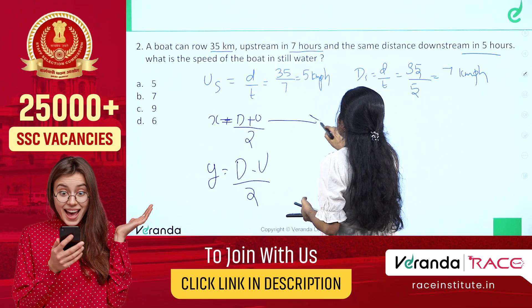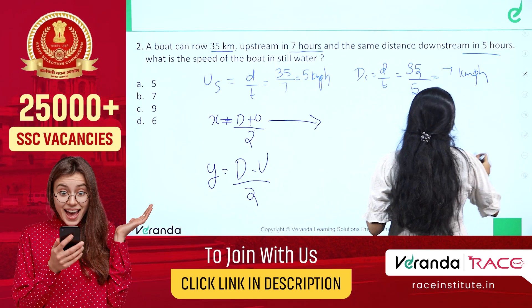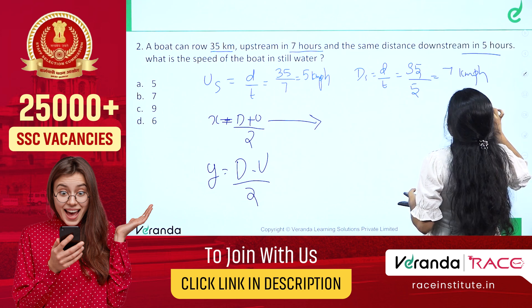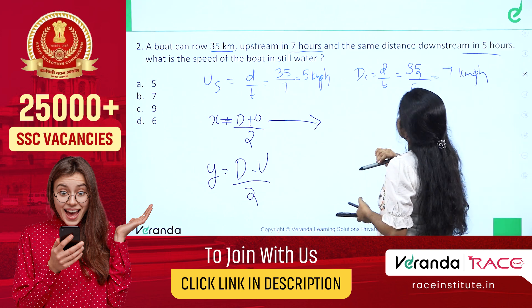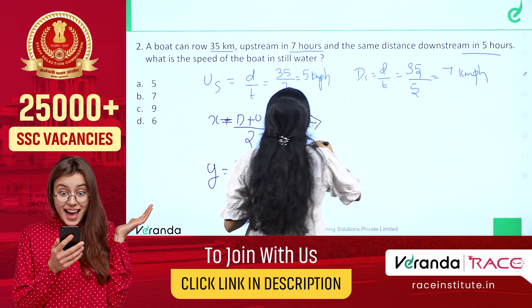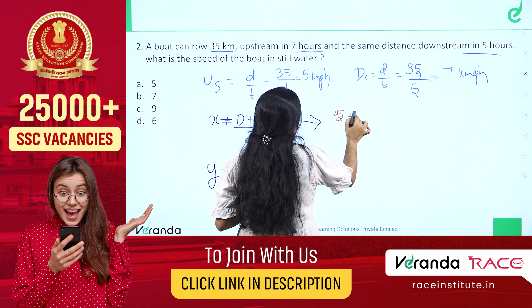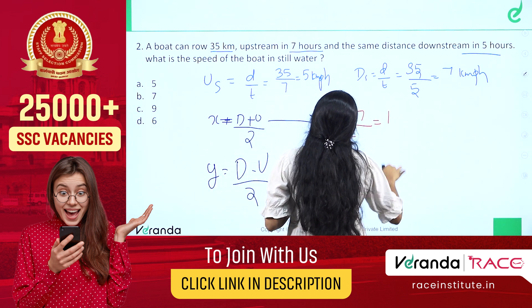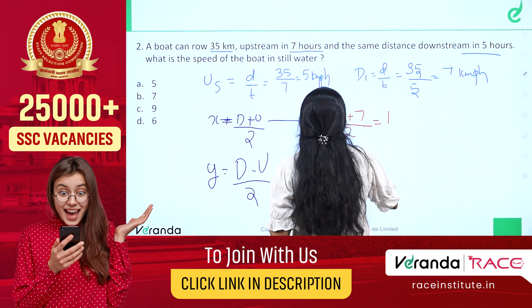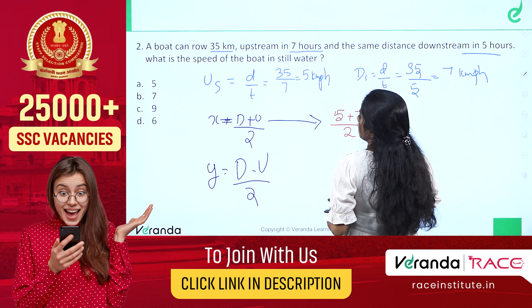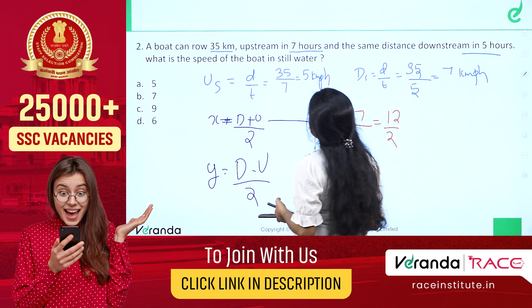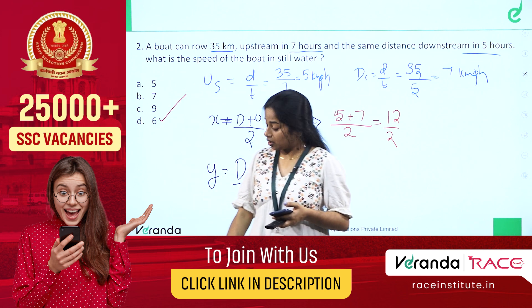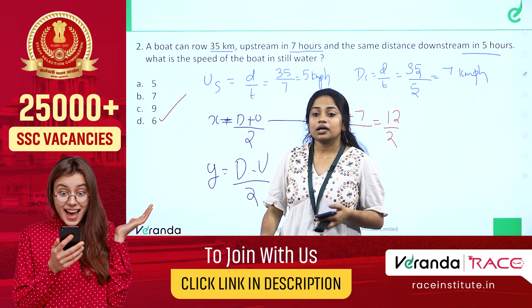Now using the formula: boat speed equals (d plus u) divided by 2, with downstream d equals 7 and upstream u equals 5. So 7 plus 5 divided by 2 equals 12 by 2 equals 6 km per hour. That is option D, the correct answer.